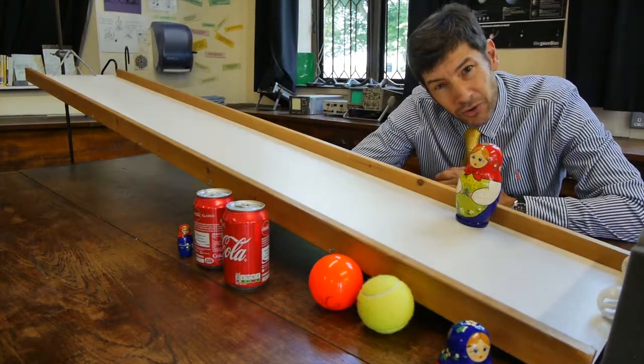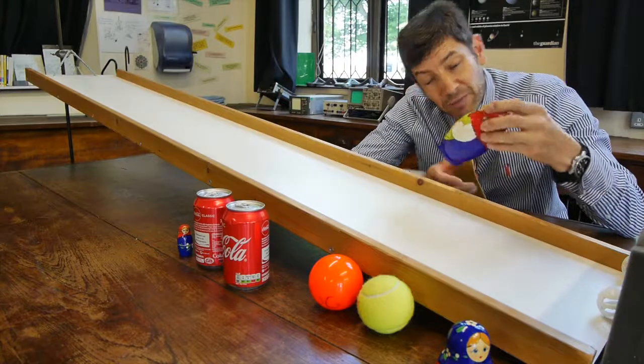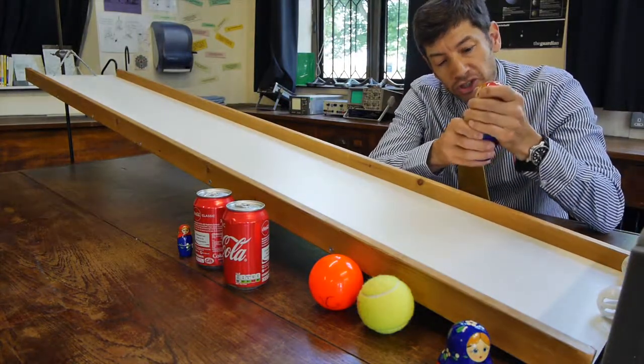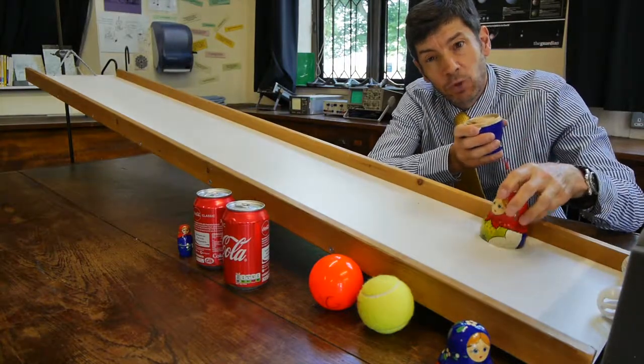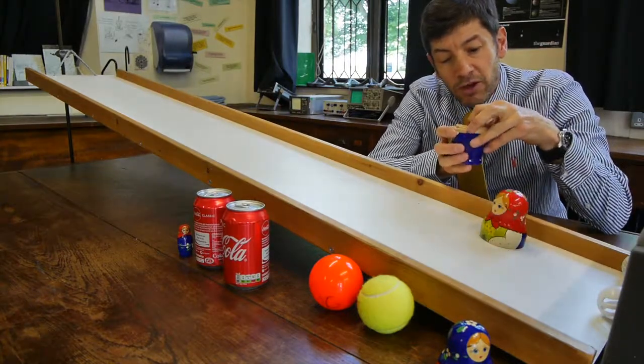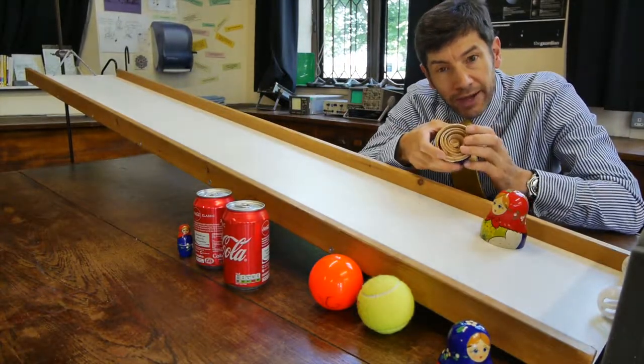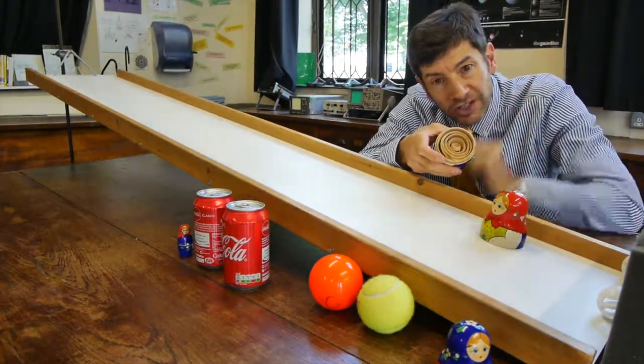So here's where the Russian doll comes into the story, kindly given to me by one of my Russian students many years ago. Now, the Russian doll shows very nicely the difference between the two types of ball going down the slope.